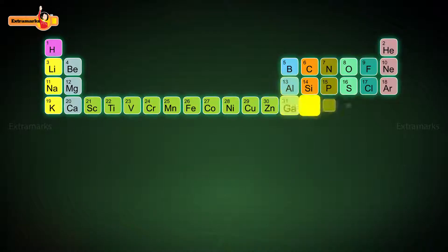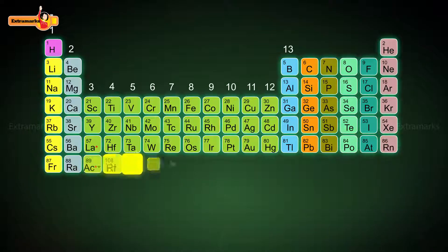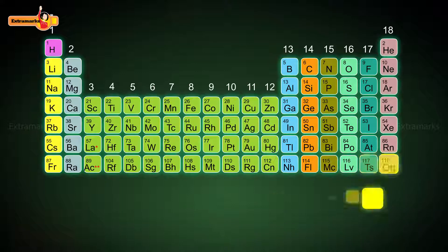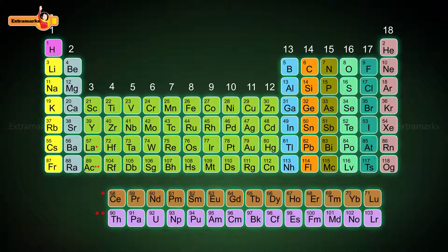Due to all these disadvantages, many scientists of that time started searching for a more basic and fundamental way for classifying elements. This search was done for many years and finally led to the modern periodic table which is used till date.